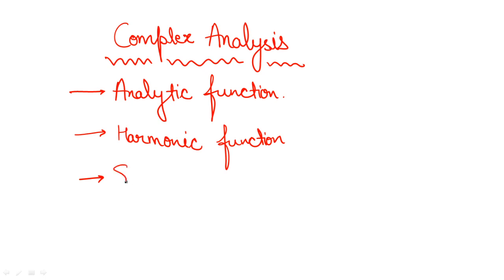Next, the type of singularities is another important point from this chapter. Singularities can be removable or essential. Further classification gives us isolated and non-isolated singularities, and then different further types of singularities. You should be clear on all of these.